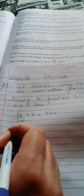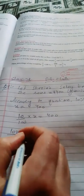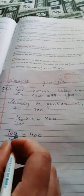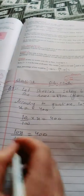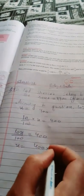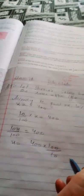10 divided by 100 times X is equal to 400. So X equals 400 times 100 divided by 10.